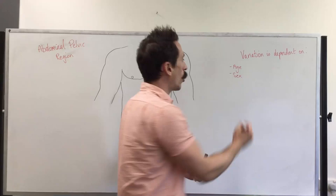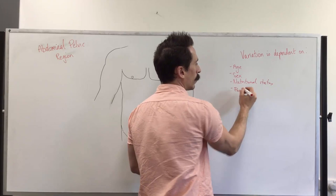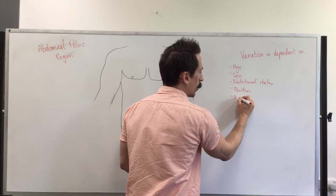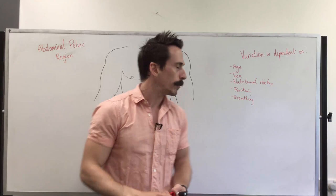their sex, their nutritional status, their position. It can also depend on whether they've taken a big breath in or taken a big breath out. And this is because of the diaphragm being the anatomical barrier between the thoracic and abdominal region can actually move some of the viscera inside of the abdomen. So just keep that in mind.